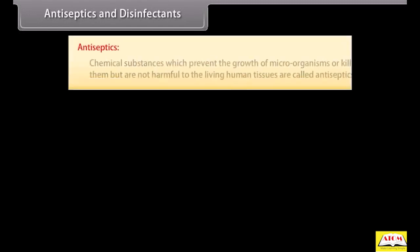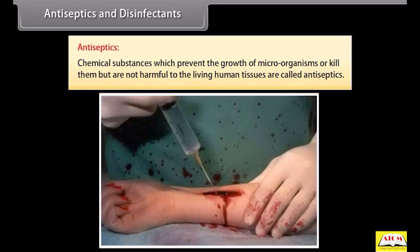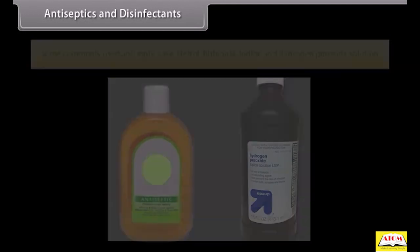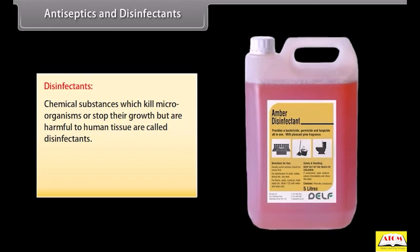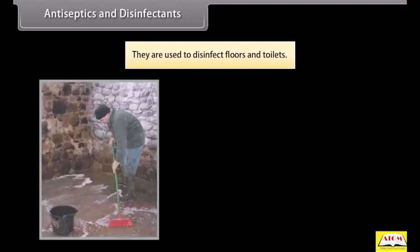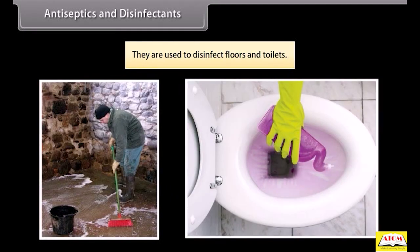Antiseptics and disinfectants: antiseptics are chemical substances which prevent the growth of microorganisms or kill them, but are not harmful to living human tissues. Antiseptics are applied to the living tissues — to wounds, ulcers and diseased skin surfaces. Commonly used antiseptics include Dettol, bithionol, iodine and hydrogen peroxide solution. Disinfectants are chemical substances which kill microorganisms or stop their growth but are harmful to human tissues; they cannot be applied directly to wounds. They are used to disinfect floors and toilets. For example, phenol, sulfur dioxide and chlorine.